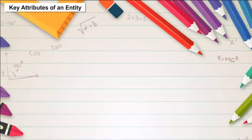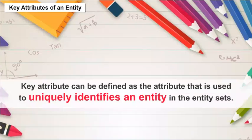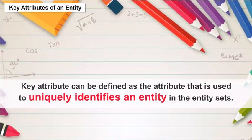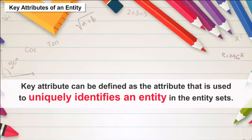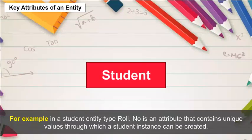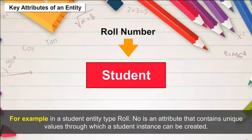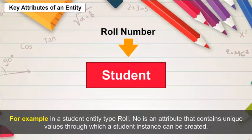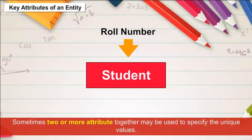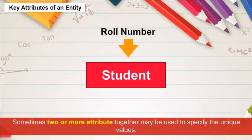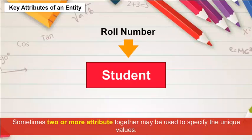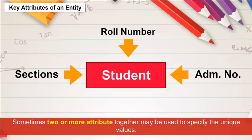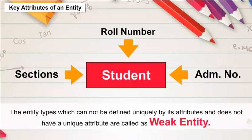Key Attributes of an Entity — a key attribute can be defined as the attribute used to uniquely identify an entity in the entity sets. For example, in a student entity type, roll number is an attribute that contains unique values. Sometimes, two or more attributes together may be used to specify unique values — for example, the student entity type can have section and roll number as composite keys.